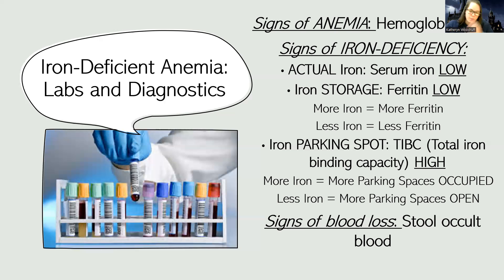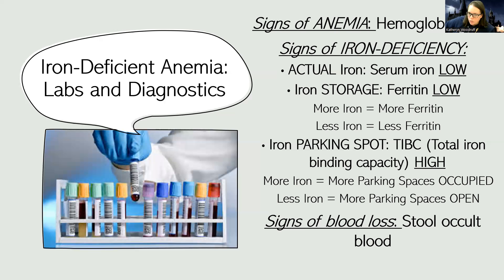The last one is a little confusing to some people, but I'll use my parking space analogy. There's storage for iron, but there's also these parking spaces for iron. Ferritin has more to do with storage of iron itself, whereas this next thing — called TIBC, or total iron binding capacity — represents the places in the body available for iron to bind to and be used. For total iron binding capacity, it's going to be high compared to everything else being low: low hemoglobin, low iron, low ferritin.